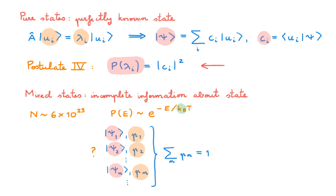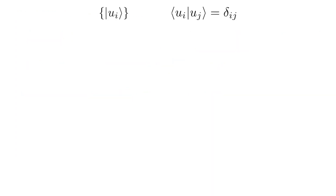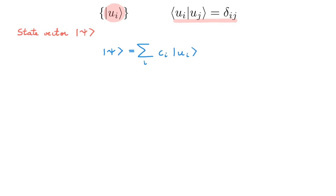Today I will introduce the density operator in the context of pure states only. We will see that in this case it leads to an equivalent formalism to that of state vectors. To introduce the density operator, let's consider a basis U of our state space and we choose it to be orthonormal. We can write the general state vector as a ket ψ and expand it in the U basis as sum over i of c_i times |u_i⟩. For a pure state such as ψ, we define the density operator ρ as the outer product of ψ with itself.